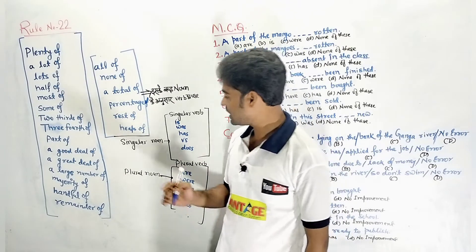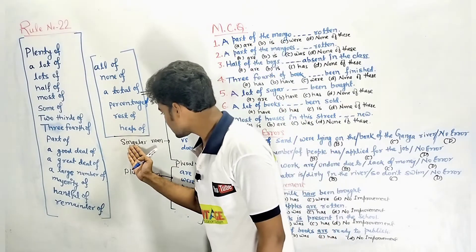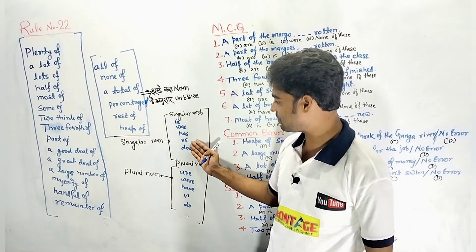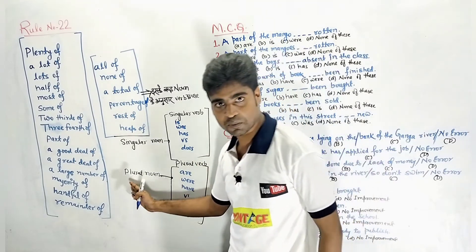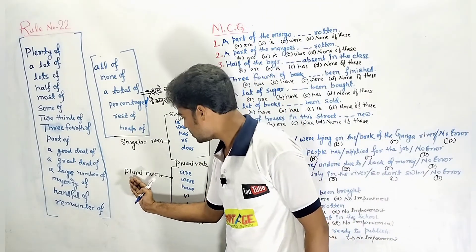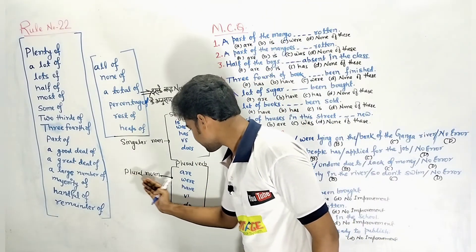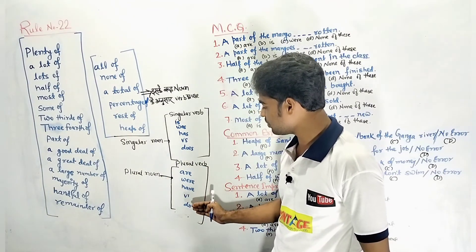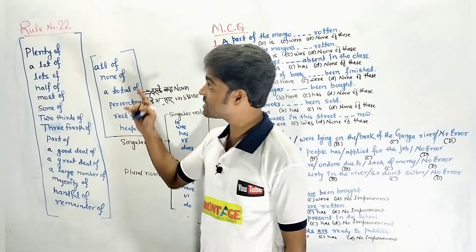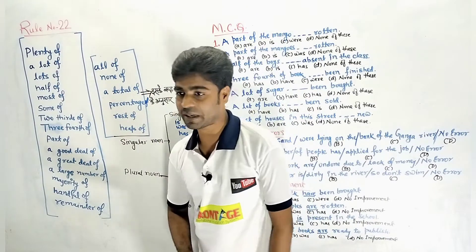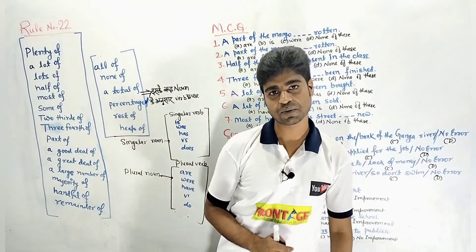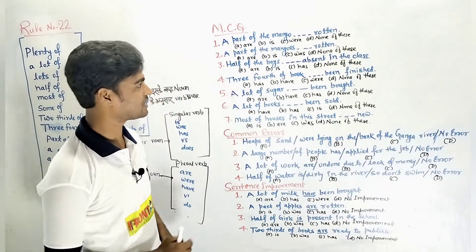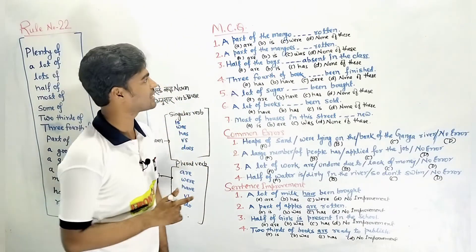So, this is rule number 22. We have to see three examples: MCQs, common errors, and sentence improvement. Let's start.